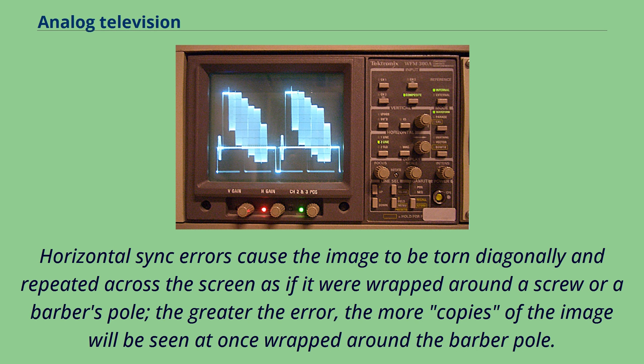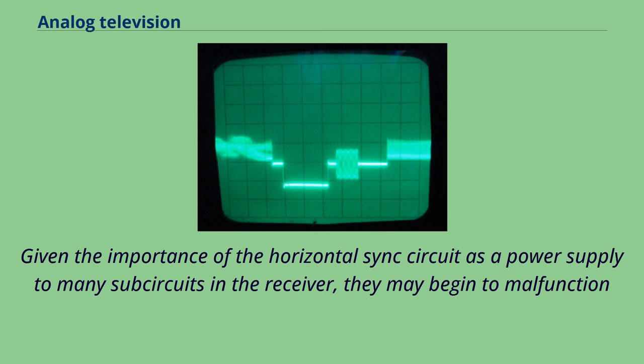In the earliest electronic television receivers, the time base for the sweep oscillators was generally derived from RC circuits based on carbon resistors and paper capacitors. After turning on the receiver, the vacuum tubes in the set would warm up and the oscillators would begin to run.